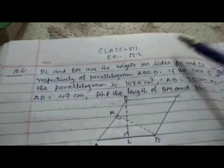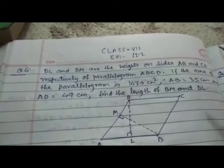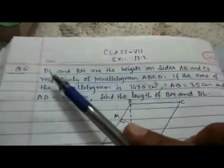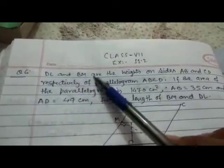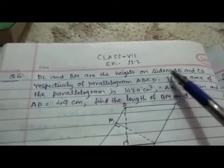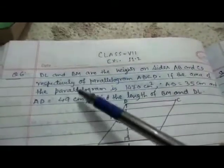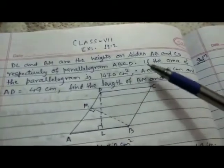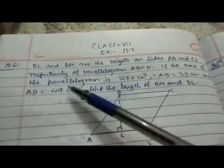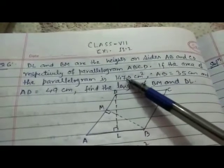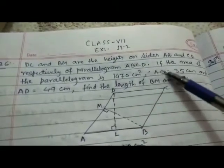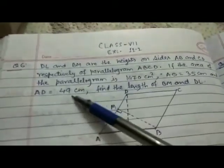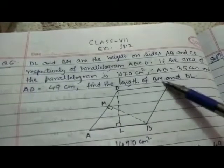Good morning dear students, here is question number six of exercise 11.2. The question is: DL and PM are the heights on sides AB and CD respectively of parallelogram ABCD. The diagram is given here. If the area of the parallelogram is 1470 centimeter square, AB is 35 centimeter, and AD is 49 centimeter, find the length of BM and DL.